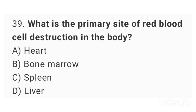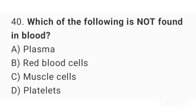Question number 39: What is the primary site of red blood cell destruction in the body? The right answer is option C: spleen. Question number 40: Which of the following is not found in blood? The right answer is option C: muscle cells.